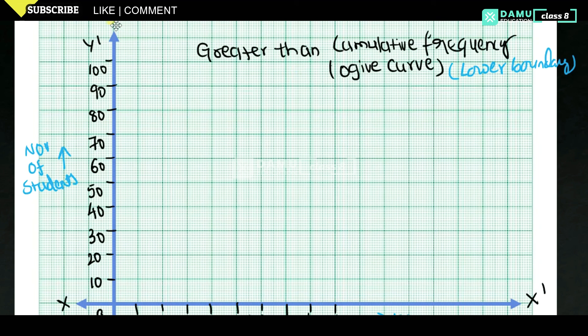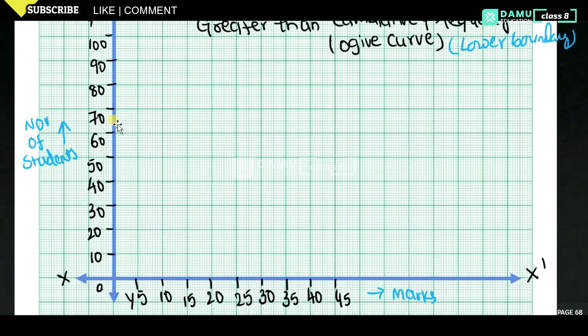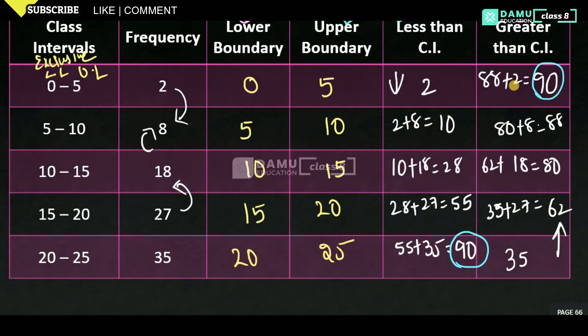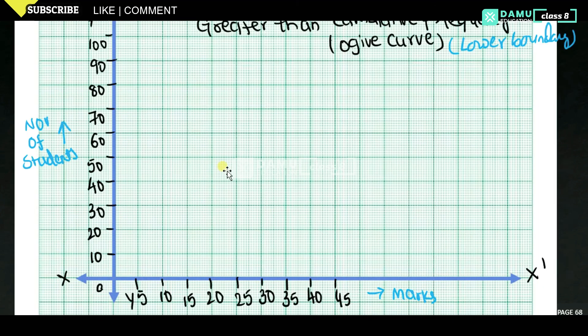For the greater than ogive, we use lower boundaries. The first class interval 0–5 has lower boundary 0, and the greater than cumulative frequency is 90. So we mark the point (0, 90). Next, lower boundary 5 gives cumulative frequency 88, so we mark (5, 88).